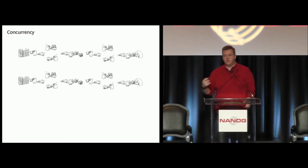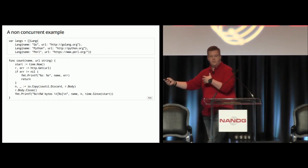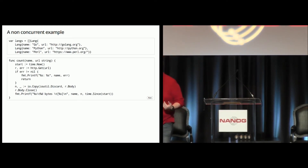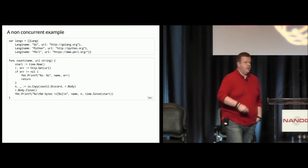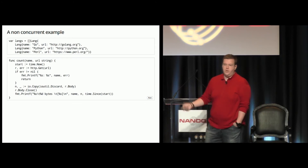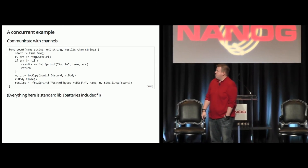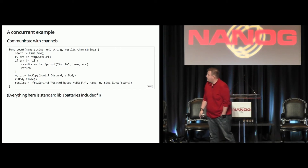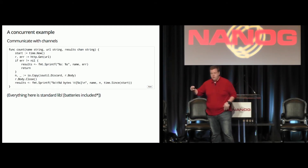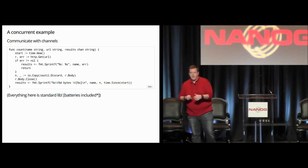But one of the biggest items for me was concurrency. If you were following along, you can press the run button here. What this code does is go out to golang.org, python.org, and perl.org — it's a very simple web scraper. And it runs, but it's very serial: it goes to one website, then the next, then the next. But what if I wanted to check the performance of thousands of websites? In Go it's very simple to do by just changing some of the syntax. You can communicate with channels and do things concurrently, very simply, without having to do a whole lot of heavy lifting.